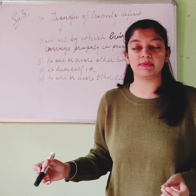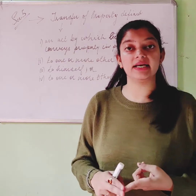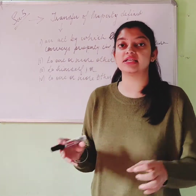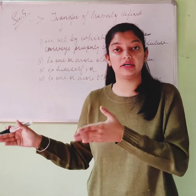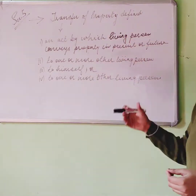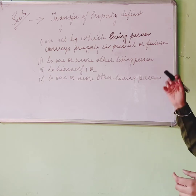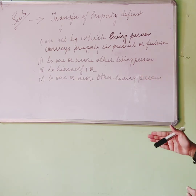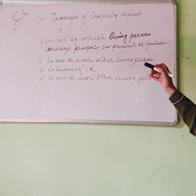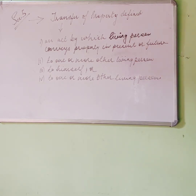When the transfer is with immediate effect, the property stands transferred to the transferee on the date when all the formalities regarding the transfer are complied with. On the other hand, when a future date is decided, the deed becomes effective from that specified future date, and the transferee's interest is created from that future date.